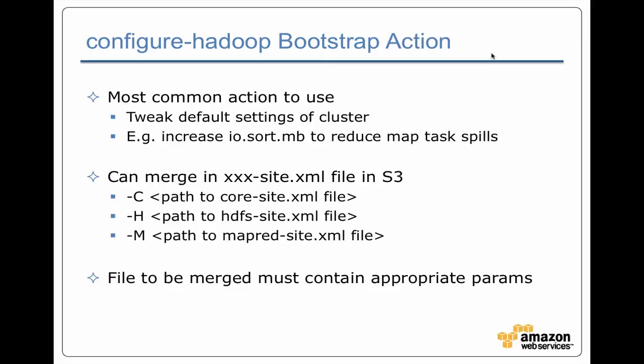One of the most common bootstrap actions, besides allocating swap space, is when you want to tweak the settings for your Hadoop job. There are two common approaches. One is when you're using a bootstrap action and you want to give it a path to an XML file that contains either your overrides or additional configuration parameters. In that case, you do something like -C and give it a path to your core-site.xml file. Everything in that file gets overlaid and merged into the existing core-site.xml. The same thing can be done with -H for HDFS settings or -M for MapReduce settings.